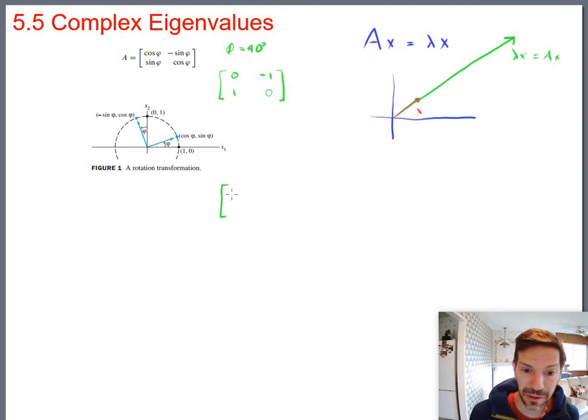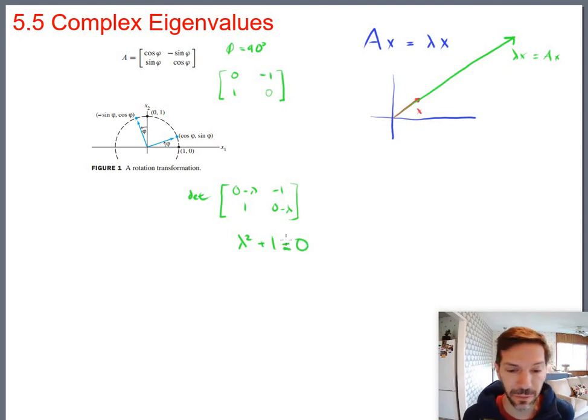So there's the matrix that rotates 90 degrees. Let's look at what would happen if we tried to find the eigenvectors and eigenvalues for this particular matrix. So the characteristic equation, we know we'd have to subtract lambda from the main diagonal and then take the determinant. So the characteristic equation there, 0 minus lambda is just negative lambda. So negative lambda times negative lambda is lambda squared minus negative 1 plus 1 equals 0.